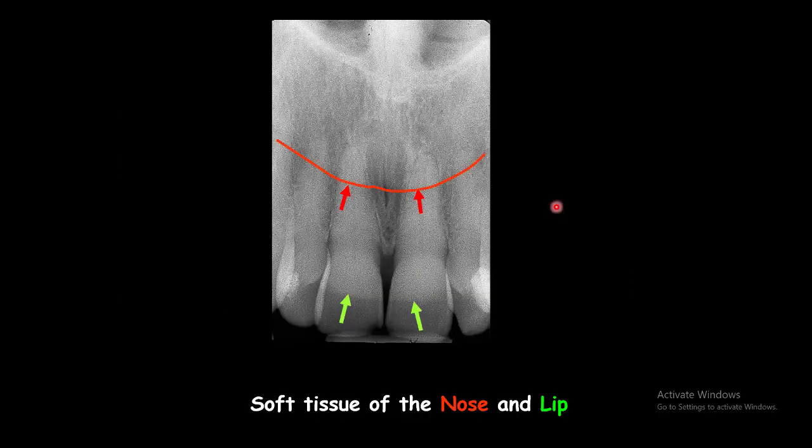The soft tissue of the nose is mostly seen at the apex of the central incisors. The soft tissue of the upper lip can also be seen in the projection of the maxillary central incisors. It is not seen near the crown of the maxillary central incisors.